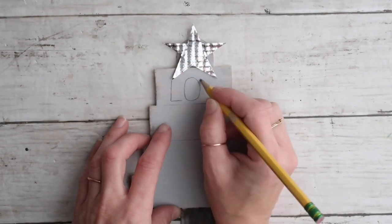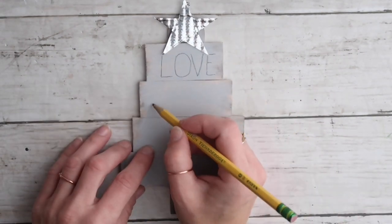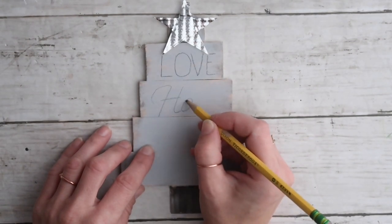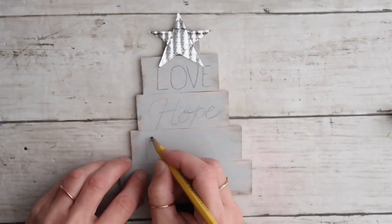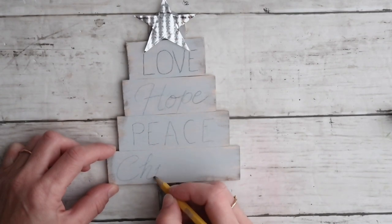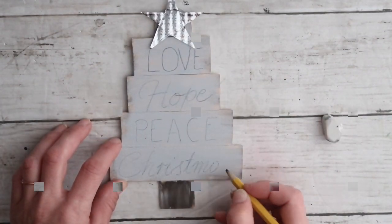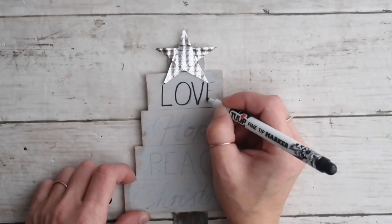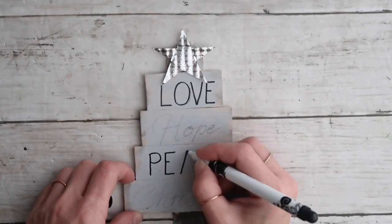The first word on the top is in capital letters and it's 'Love'. The next one is in a font that I saw as an ornament in one of the stores, and I really wanted to recreate it as a bigger sign. I wrote 'Hope', and then next one is 'Peace', and next one is 'Christmas'.